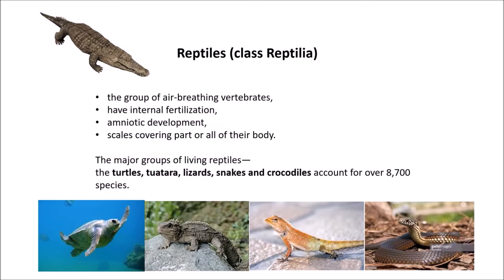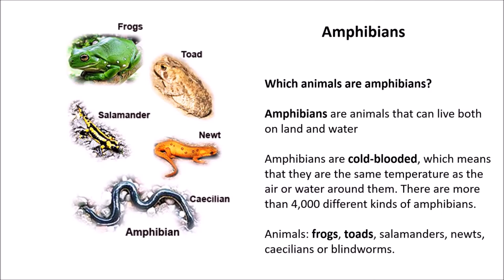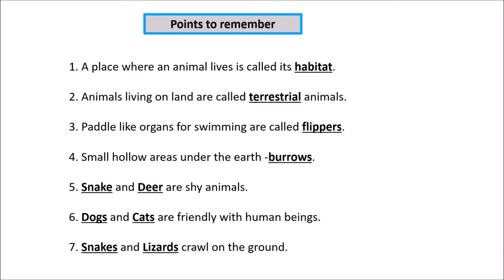You should also know which animals are amphibians. Amphibians are cold-blooded, which means that they are the same temperature as the air or water around them. There are more than 4,000 different kinds of amphibians. Some of these animals are frogs, toads, salamanders, newts, caecilians, or blind worms. Amphibians are animals that can live both on land and water.